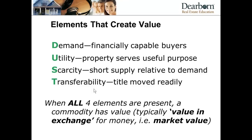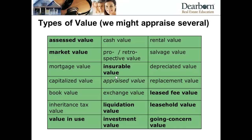Scarcity means there must be a limit to how much is available in order to create demand and value. Sand in small quantities has no scarcity, so you won't get someone to pay for a handful. Transferability means the title can be moved. If there's a lien on property that prevents transfer without someone else's permission or payment, or if the property has been condemned, it can't be transferred and there will be no value that you can realize by selling it in the market. There may have been value to the government entity that condemned a piece of property for a freeway, but that value is to them, not to someone else who wants to use the home long term.